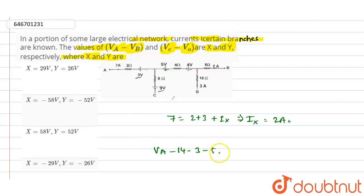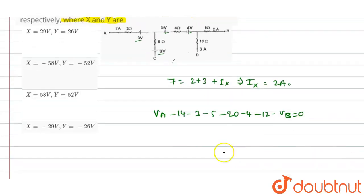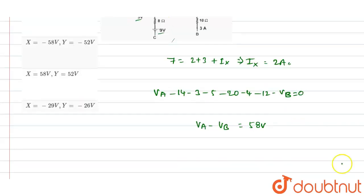Minus 3 minus 5 minus 20 minus 4 minus 12 minus Vb is equals to zero and we will get the voltage difference, the potential difference between Va and Vb as Va minus Vb will be equals to 58 volts.